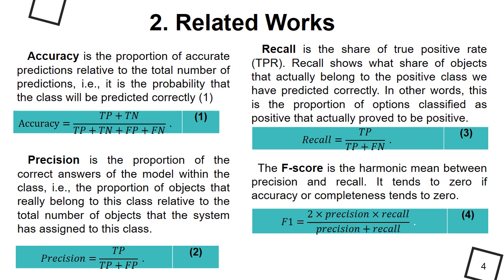Precision is the proportion of the correct answers of the model within the class. Recall is the share of true positive rate. Precision and recall don't depend on the relationship of classes and therefore can be used in unbalanced samples.